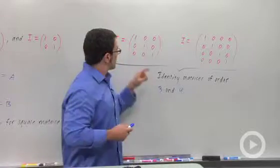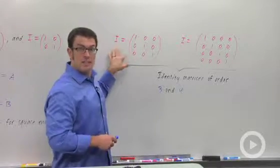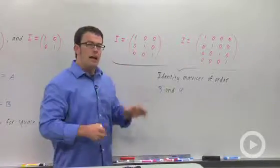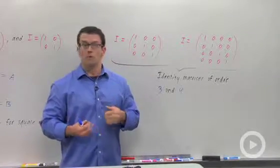And just like you saw before, if I multiply a 3 by 3 matrix by this matrix, it will remain unchanged. These are kind of like the multiplicative identity of real numbers, which is the number 1.